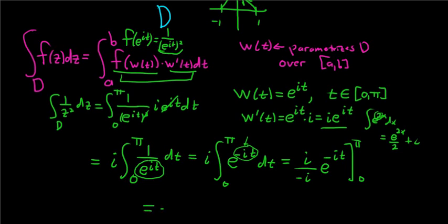This is equal to negative 1 times, then we have e to the negative i t, and we're going from 0 to pi.